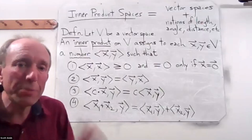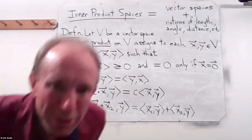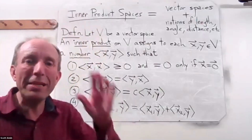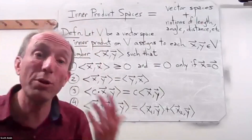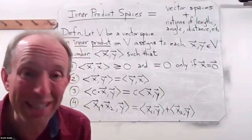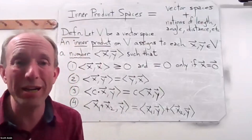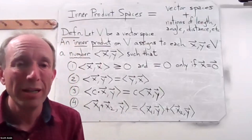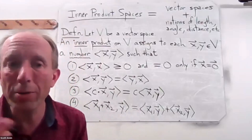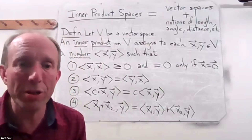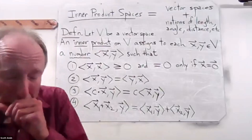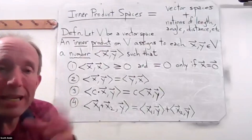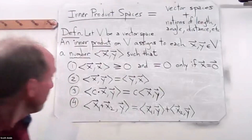The fourth axiom says that if we add two vectors, X1 and X2, and take the inner product of that with Y, this should be the same as the inner product of X1 with Y plus the inner product of X2 with Y. The third and fourth axioms have to do with scalar multiplication and addition — the two operations in the vector space — and the inner product should respect those operations.